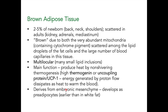Brown adipose tissue is found in 2 to 5% of newborns, typically in the back, neck, and shoulders, and is also scattered in adults near the kidneys, adrenals, and mediastinum. The majority of adipose tissue in adults is white. Brown adipose tissue appears darker due to abundant mitochondria containing cytochrome pigment scattered among lipid droplets and a large number of blood capillaries.